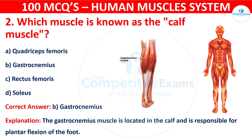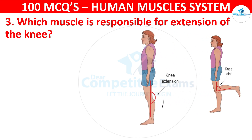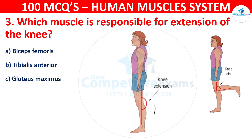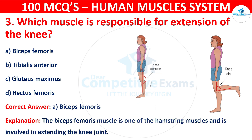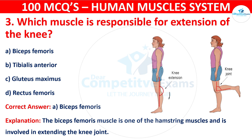The gastrocnemius is responsible for plantar flexion of the foot. Question number three: Which muscle is responsible for extension of the knee? Your options are: Biceps femoris, Tibialis anterior, Gluteus maximus, or Rectus femoris. The correct answer is A, that is biceps femoris. The biceps femoris muscle is one of the hamstring muscles and is involved in extending the knee joint.